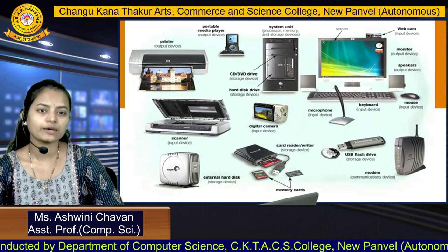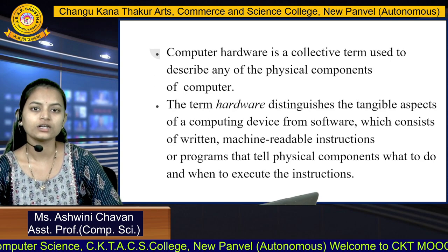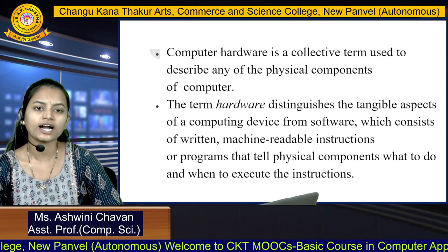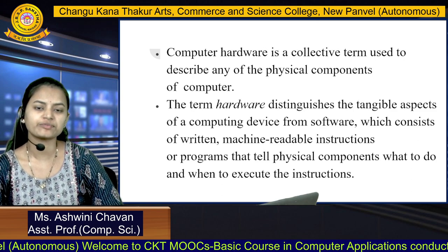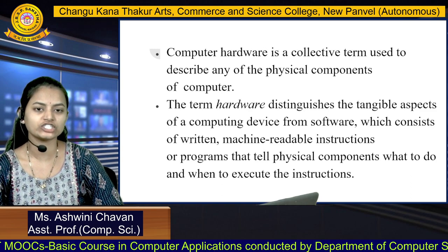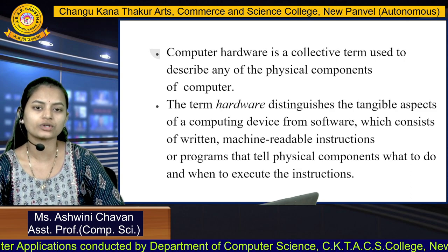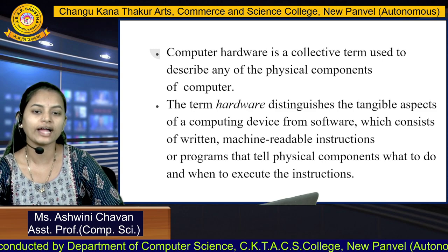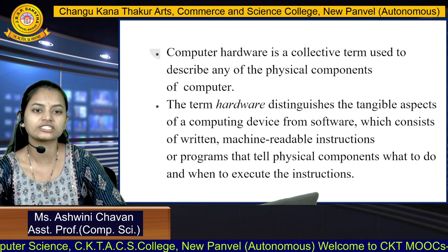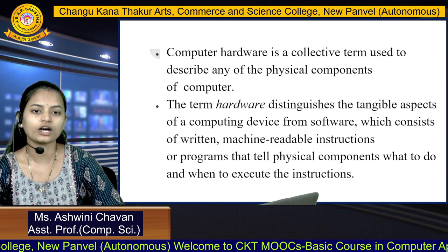The computer hardware is a collective term used to describe any of the physical components of the computer. This term distinguishes the tangible aspects of computing devices from software. Hardware and software are totally different — hardware refers to physical things, while software consists of machine-readable instructions or programs that tell the physical components what to do and when to execute instructions.